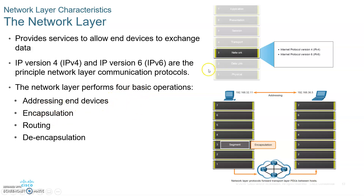It does addressing after it grabs the segment and encapsulates it in a packet — it puts the source and the destination IP addresses on it. It encapsulates the layer four segment into a packet. Routing is trying to find the best route outside in a WAN to the destination. And decapsulation — being able to grab the frame and pull the packet out.